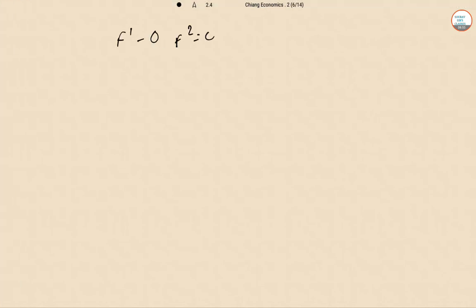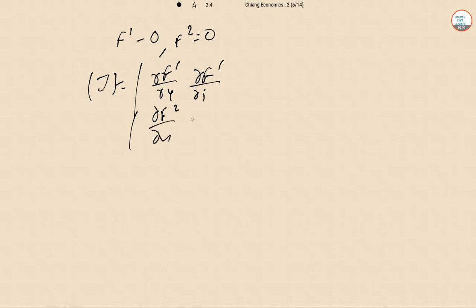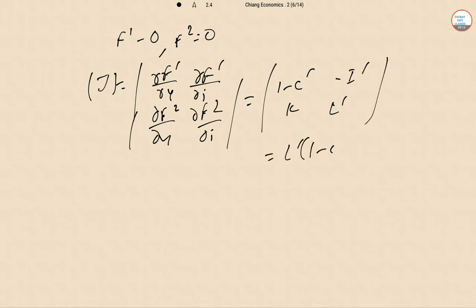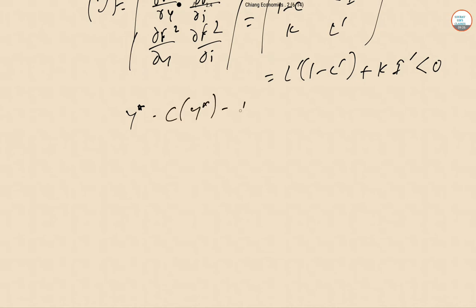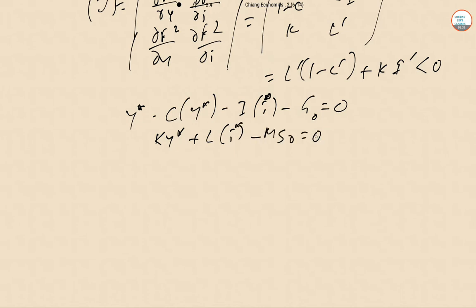We set up two equilibrium equations F₁ = 0 and F₂ = 0 and compute the Jacobian. ∂F₁/∂Y, ∂F₁/∂i, ∂F₂/∂Y, ∂F₂/∂i give us the matrix [1−C', −I'; k, L']. The determinant J = L'(1−C') − k·(−I') = L'(1−C') + kI', which is negative. So the implicit function theorem applies. The equilibrium identities are Y* − C(Y*, i*) − I(i*) − G₀ ≡ 0 and k·Y* + L(i*) − M_s ≡ 0.